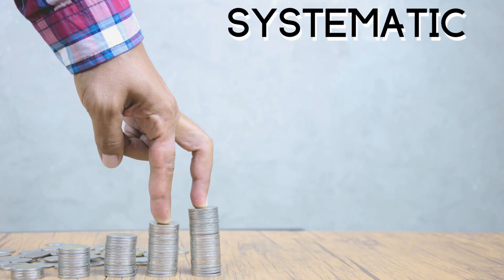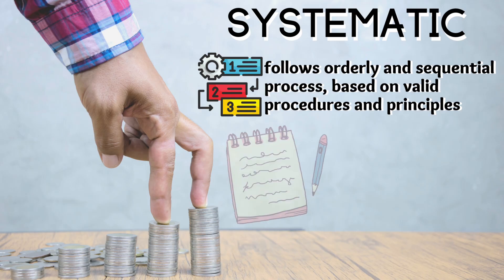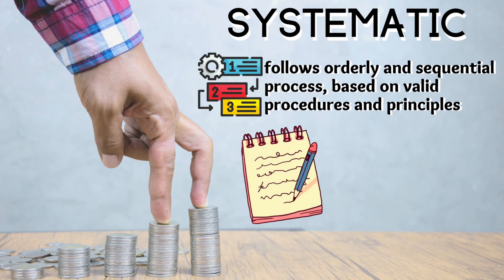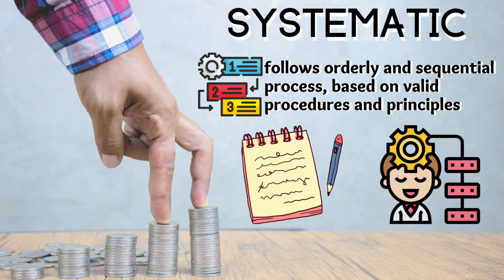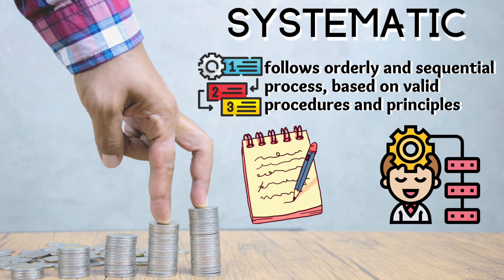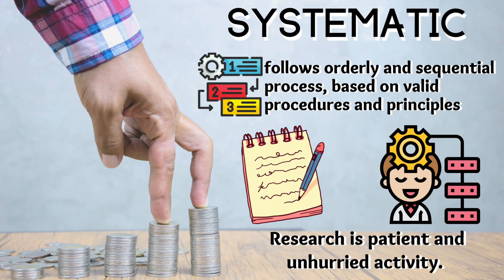Research is systematic. Research follows an orderly and sequential process based on valid procedures and principles. It takes time and a lot of patience when writing research. There must be no missed steps or procedures, and the process of identifying the problem and reaching conclusions must all be followed. Research is a patient and unhurried activity.